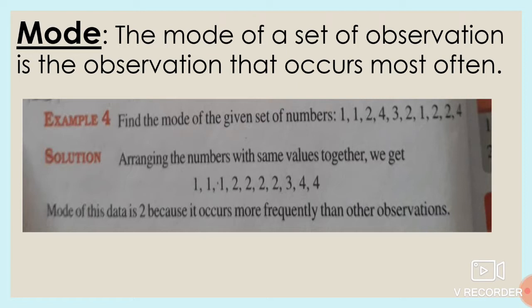The mode of a set of observations is the observation that occurs most often. When we look at a set of observations, the one which occurs most frequently — that answer will be the mode.